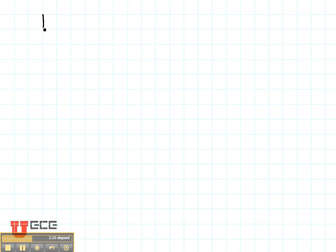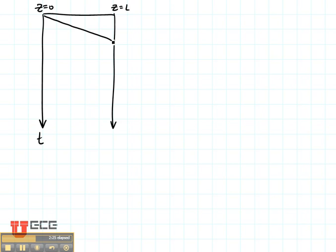In fact, we also draw the original bounce diagram just the same, with T going down and distance from Z equals zero to L going across. Here's Z equals zero, here's Z equals L. And then we consider our first voltage step exactly the same way we did before. This is V1+, V1-, V2+, and V2-.